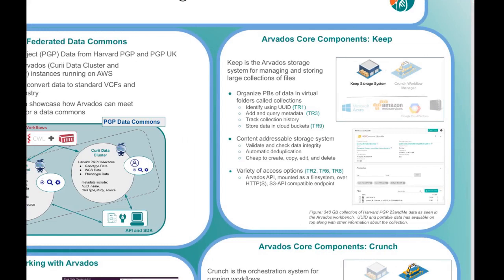Arvados consists of two major components: a data management component called KEEP and a compute management component called CRUNCH. Data Commons Technical Requirement 1 is data identification using persistent digital IDs. KEEP organizes sets of files into a collection which have a human readable name, a database UUID, and an immutable identifier based on the data content called a portable data hash. In the PGP example, files contributed by study participants such as their personal sequencing results are stored in collections.